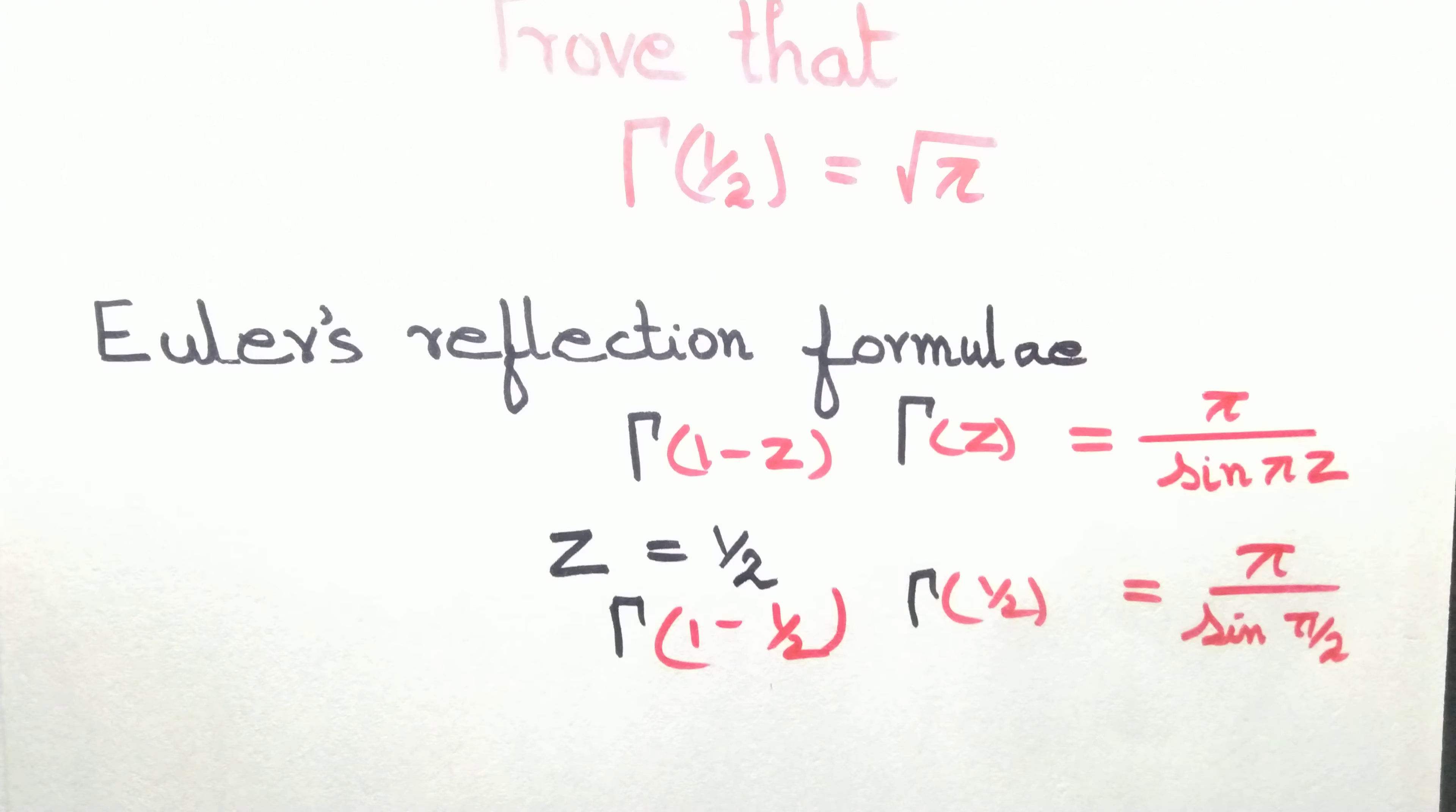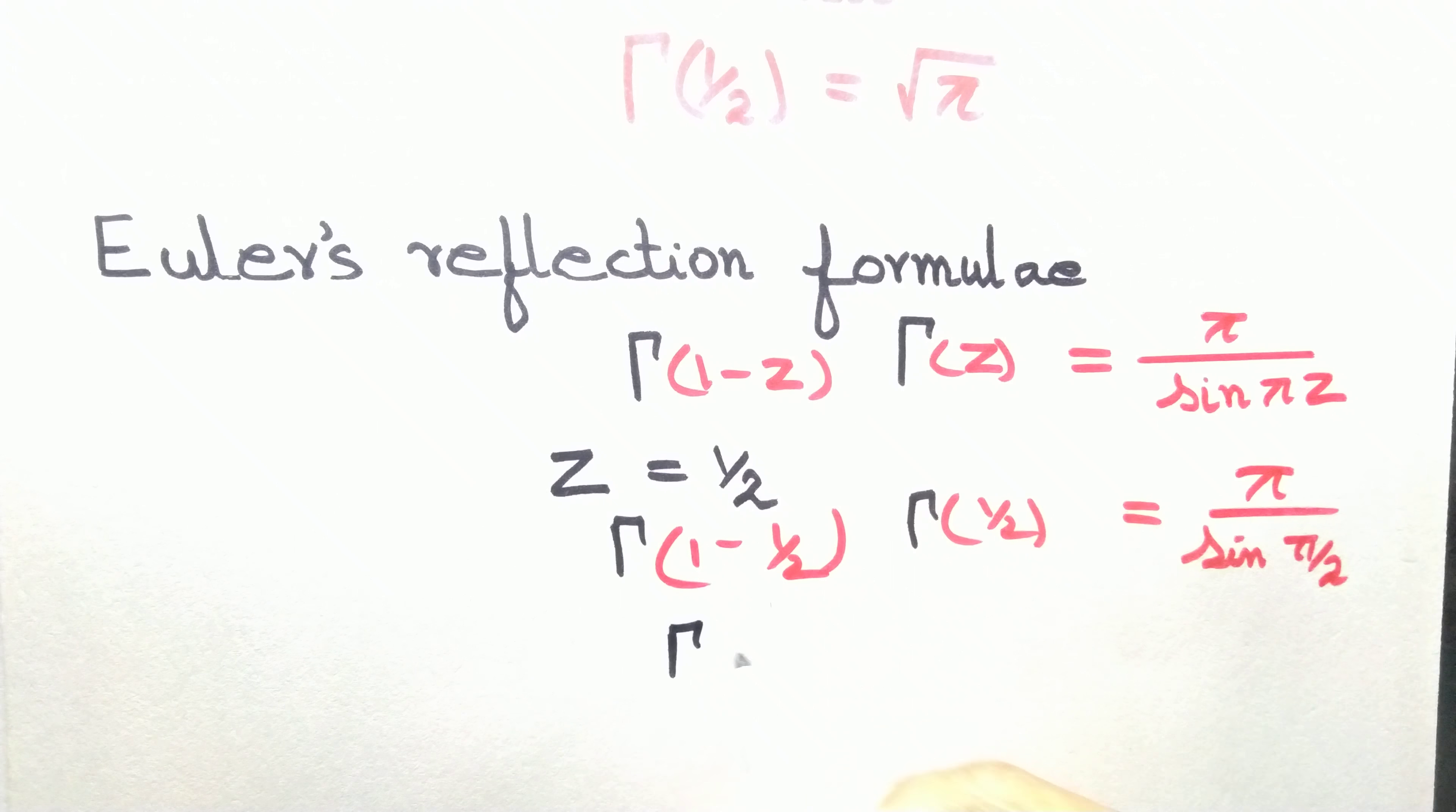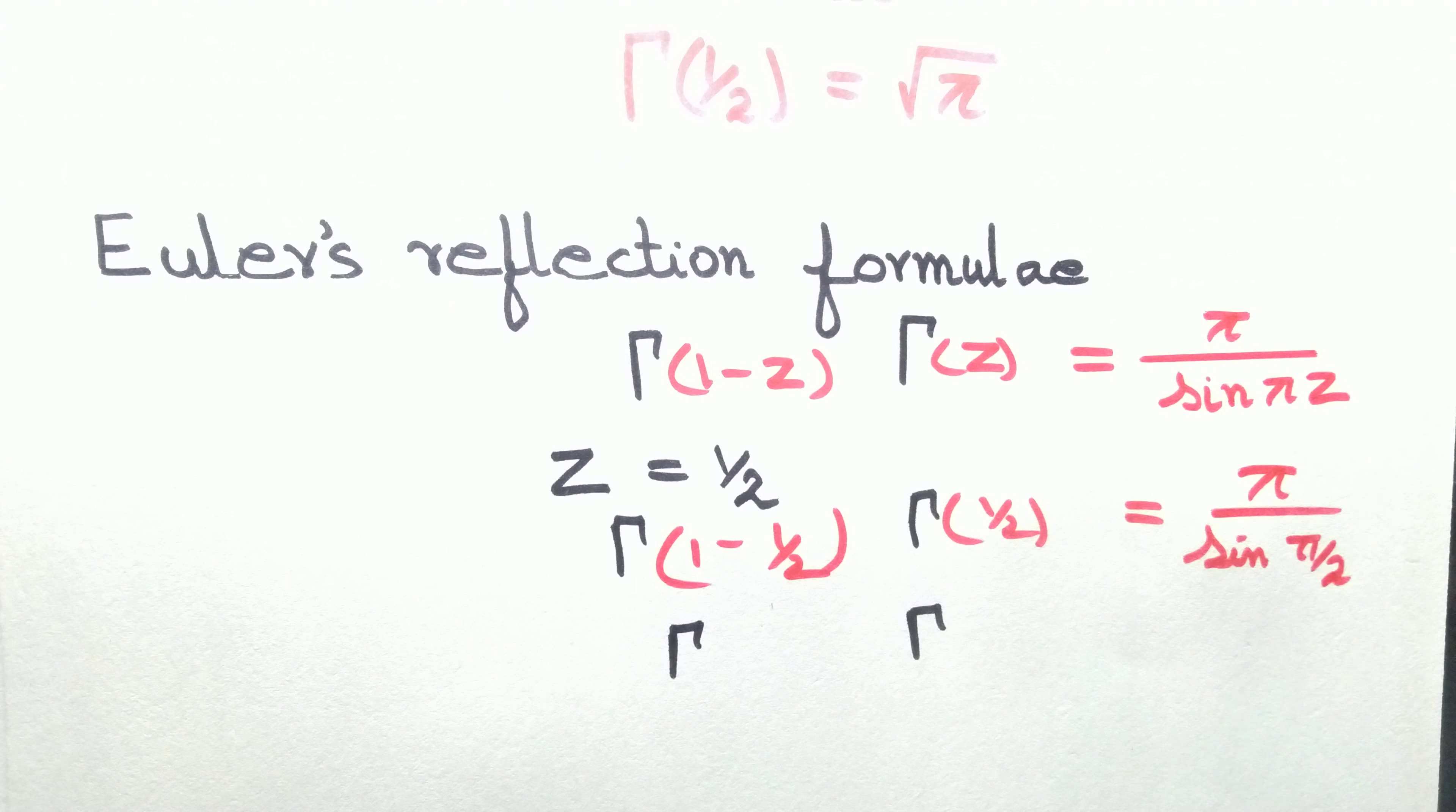Now, 1 minus half is half, so we have gamma of half times gamma of half.